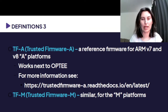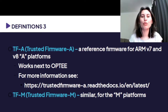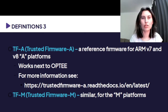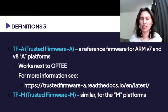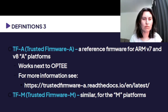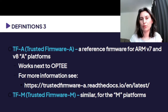TF-A and TF-M are two reference implementations of firmware as open source — for the A-series of ARM processors and the M-series platform respectively. TF-A is expected to work next to OP-TEE and supply it with the core hardware operations. There is documentation you can look into to see the details of the implementation and how it works.